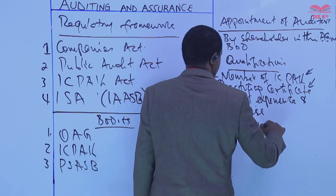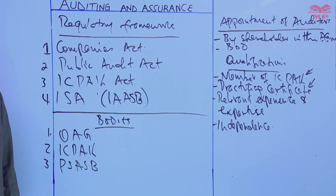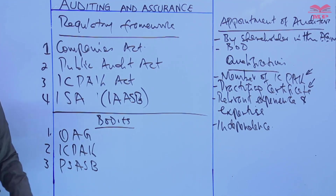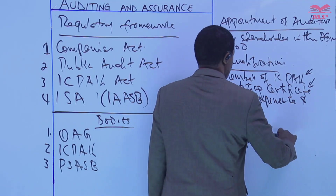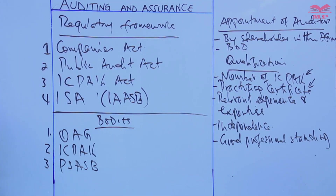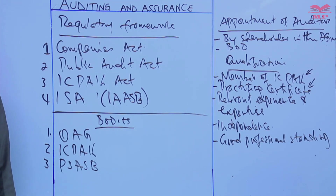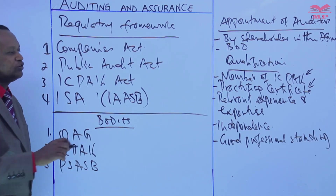Fourth is independence. The auditor must be independent of the company being audited. The auditor must be free from any relationships or interests that could compromise objectivity. Fifth is good professional standing. For one to qualify to be an auditor, one must be of good professional standing. The auditor must have a clean disciplinary record — no history of professional misconduct or ethical violations.